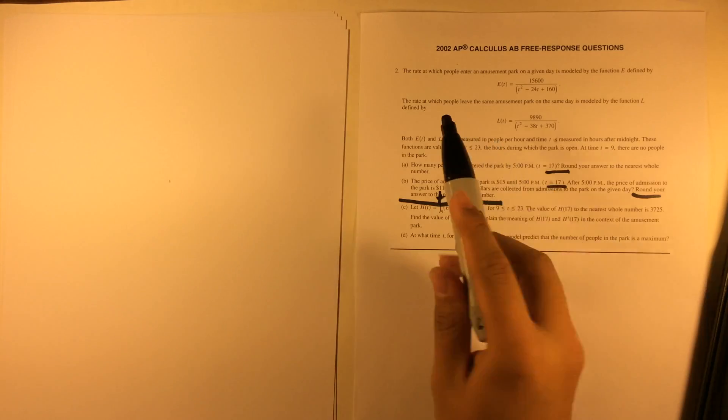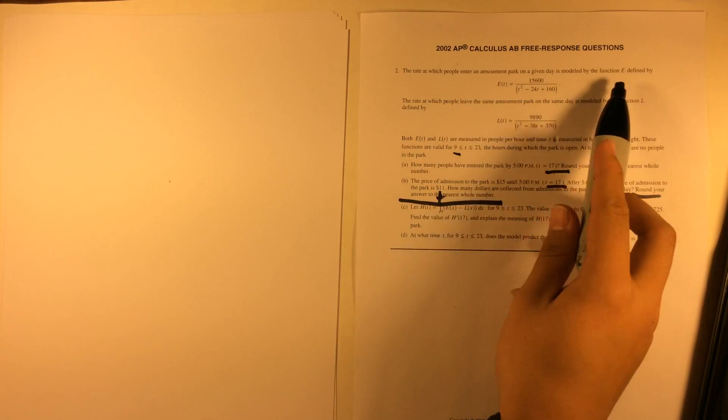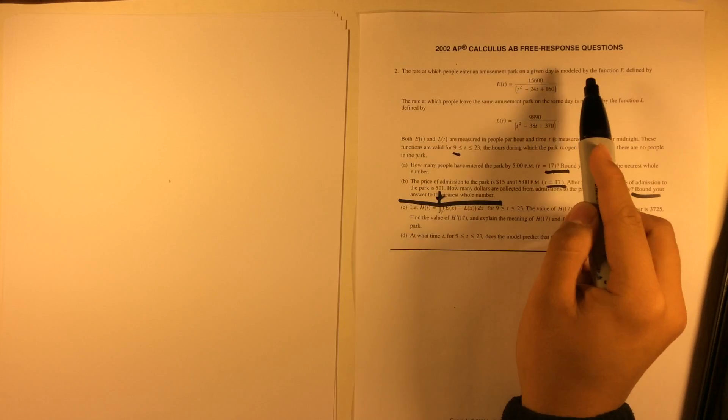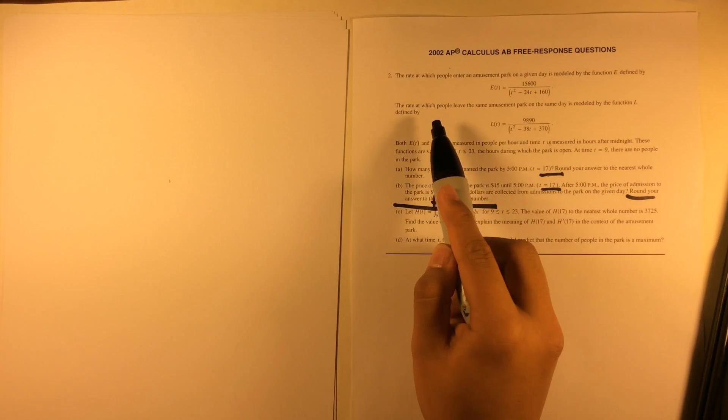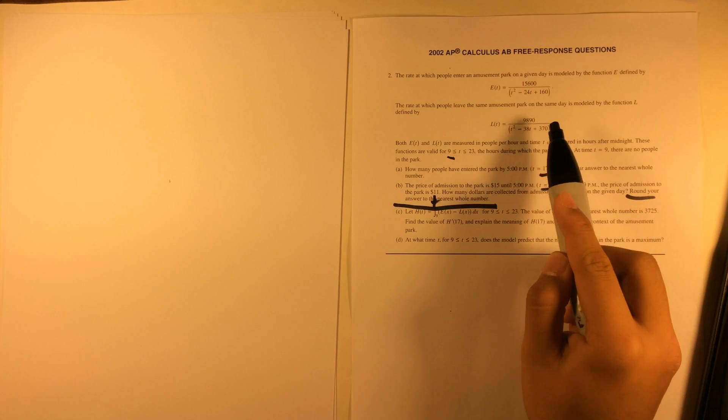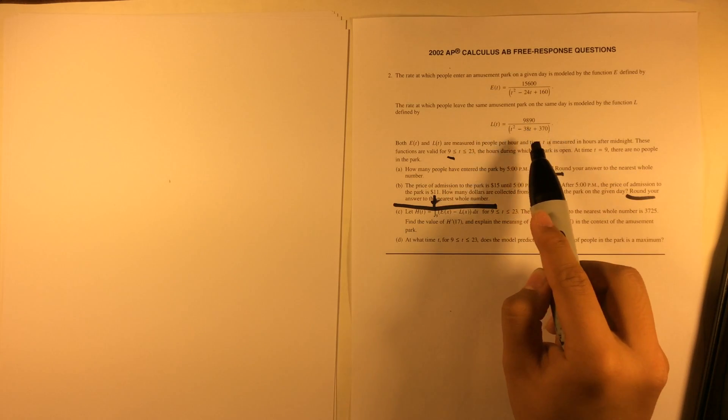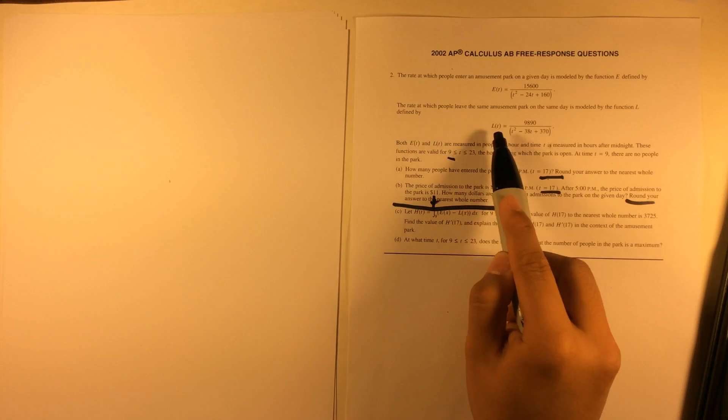The rate at which people enter Newton's park on a given day is modeled by function E, defined by E(T) equals 15600 over T squared minus 24T plus 160, and the rate at which people leave is 9890 over T squared minus 38T plus 370, which is L(T).